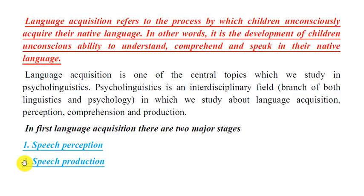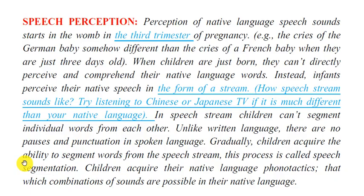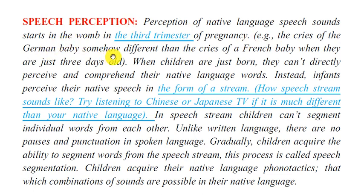In first language acquisition, there are two major stages: speech perception and speech production. Speech perception — the perception of native language speech sounds — actually starts in the womb during the third trimester of pregnancy. For example, the cries of a German baby are somehow different from the cries of a French baby when they are just three days old.